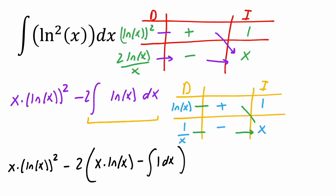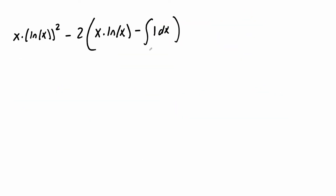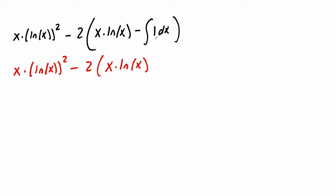Now I'm going to rewrite and solve for the integral of 1, which is very easy. So we have x·(ln(x))² minus 2·(x·ln(x) minus the integral of 1 is just x), plus C.